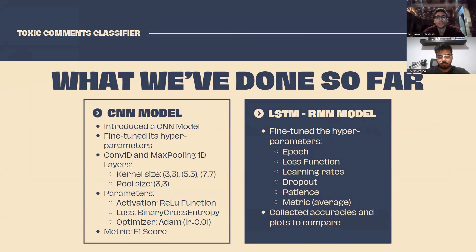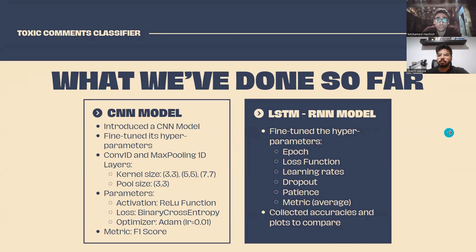As for the progress, we introduced a new CNN model in the source code, fine-tuned its hyperparameters, and gathered the plots and results. The CNN uses 1D convolutional and max pooling layers — 1D because it's text data. We experimented with different kernel sizes: 3, 5, and 7, and settled on a kernel size of 3. The initial CNN model used ReLU as the activation function, binary cross-entropy as the loss function, the Adam optimizer with a learning rate of 0.01, and F1 score as the metric, since it is the best metric given our problem statement and consistent with the other models.